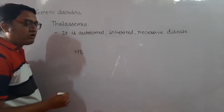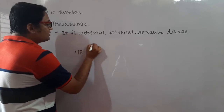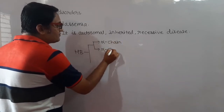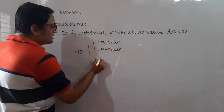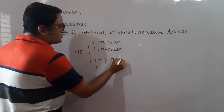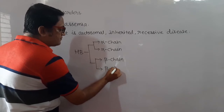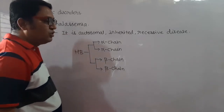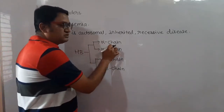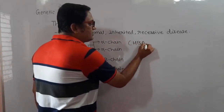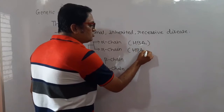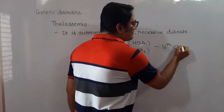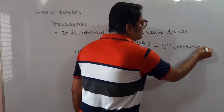Normal hemoglobin is made up of four polypeptide chains: two alpha chains and two beta chains. The two alpha chains are encoded by genes HbA1 and HbA2, which are present on the 16th chromosome.